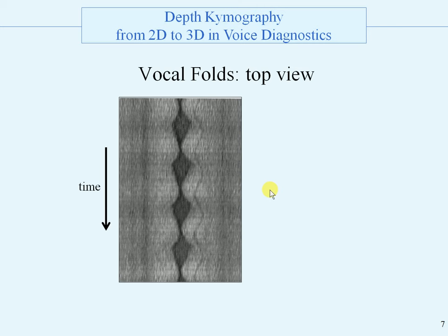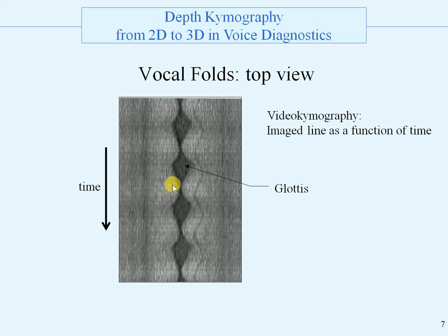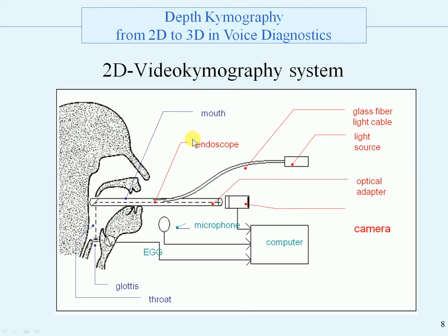After this stroboscopic image we will look in more detail at 2D videokymography pictures. A top view of the vocal folds with the image line as a function of time. Here is the glottis — the image line over the glottis — opening, closing, opening, closing, etc. Here is that blood vessel again. This is an overview of the videokymography system with an endoscope, a mirror, and you can look on top of the glottis and the vocal folds.